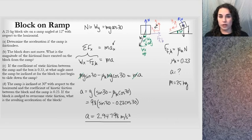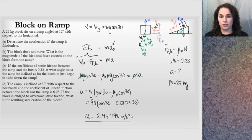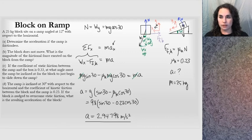Again, the normal force is not just the weight — a y-direction analysis shows it's only a component of the weight, while the other component pulls the block down the incline. The acceleration here is larger than in part A when it was frictionless but at a smaller angle of 12 degrees. At 30 degrees it moves at a larger acceleration, which makes sense.